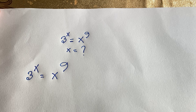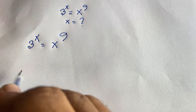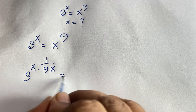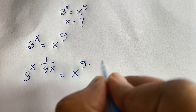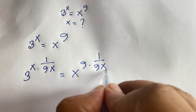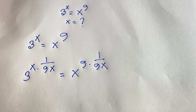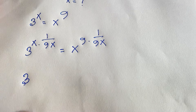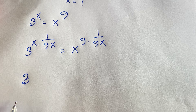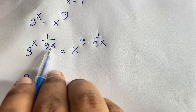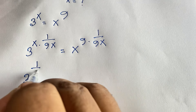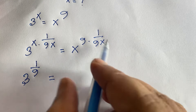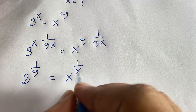Now I can say: I will raise both sides to the exponent 1 over 9x. So 3 to the power x times 1 over 9x, and x to the power 9 times 1 over 9x. That gives exponent 1 over 9 on the left. On the right, the 9 cancels, giving us x to the power 1 over x.